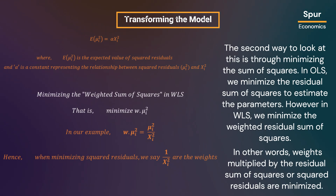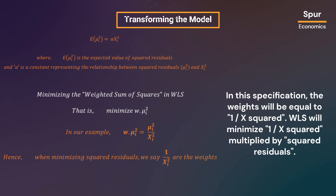The second way to look at this is through minimizing the sum of squares. In OLS, we minimize the residual sum of squares to estimate the parameters. However, in WLS, we minimize the weighted residual sum of squares — that is, weights multiplied by the squared residuals are minimized. In this specification, the weights will be equal to 1 over X squared. So WLS will minimize 1 over X squared multiplied by the squared residuals.